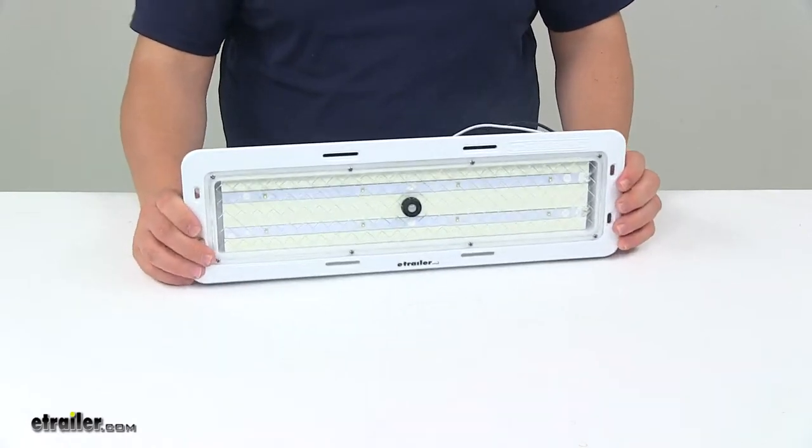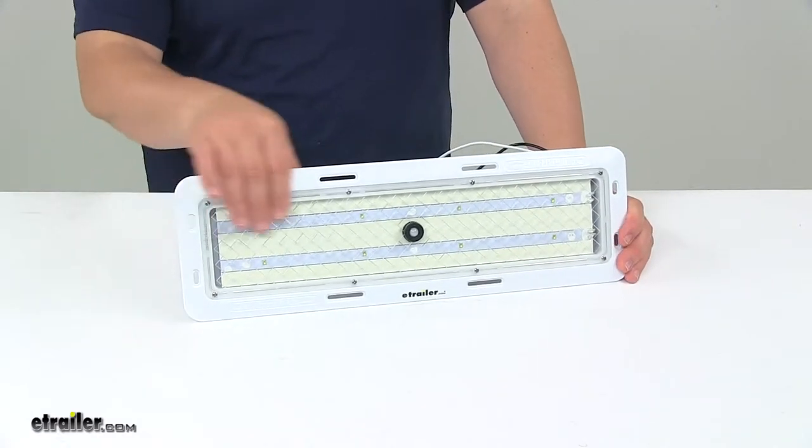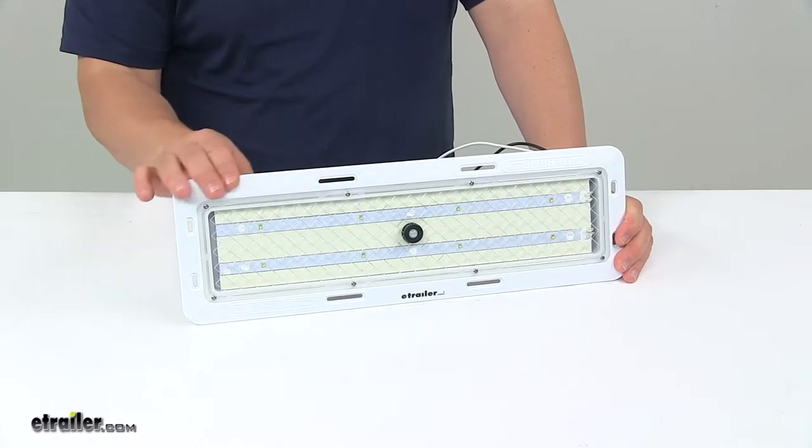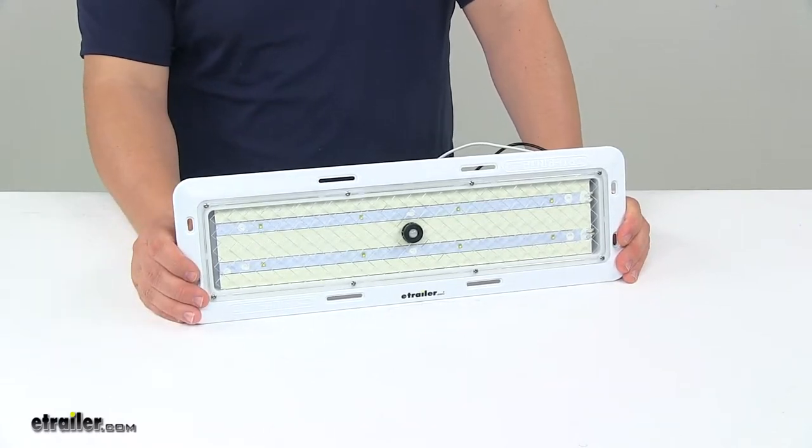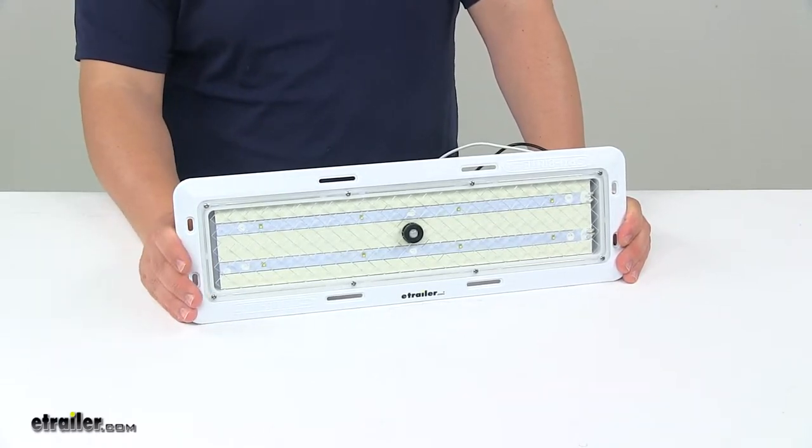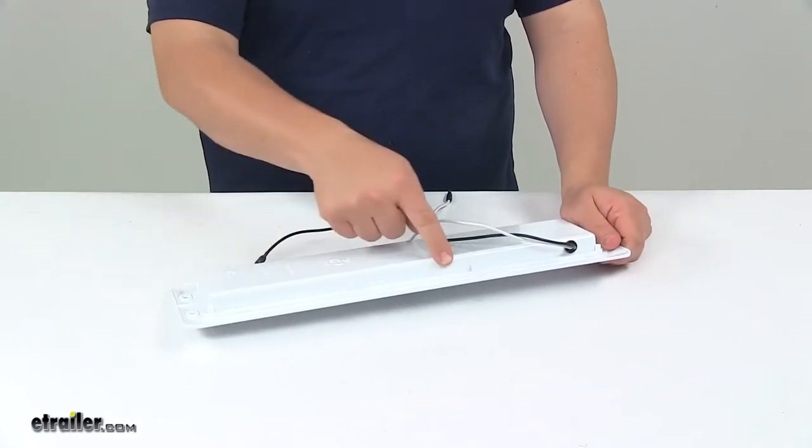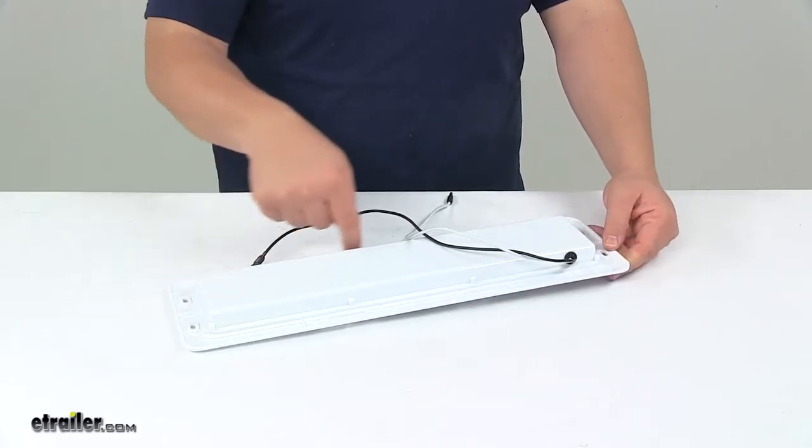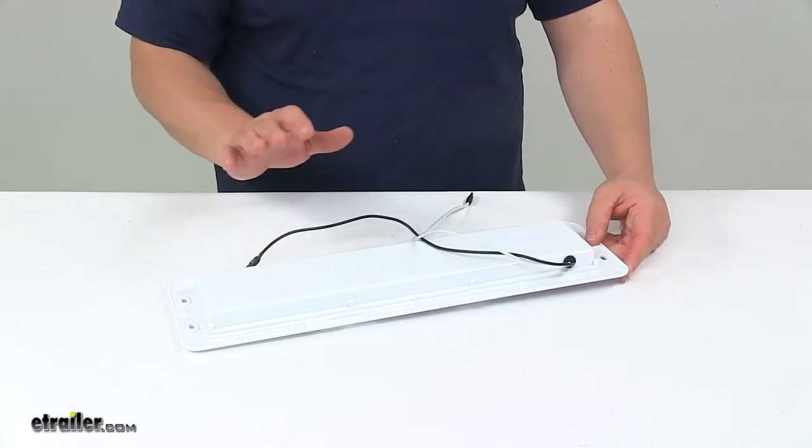It features a polycarbonate lens and housing. It's very strong and durable. We're looking at a clear lens with a white base. When it comes to the installation, that's a recessed mount installation, mounting hardware not included. You will need to cut out for this portion in order for the light to sit flush.